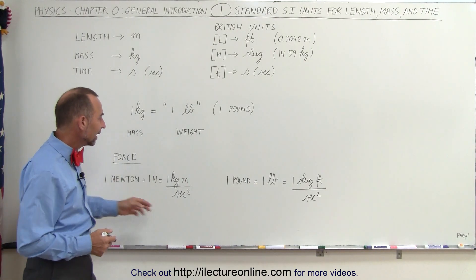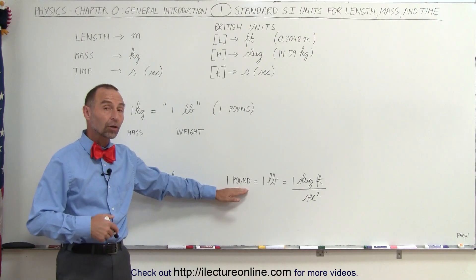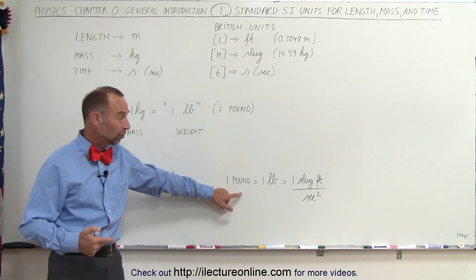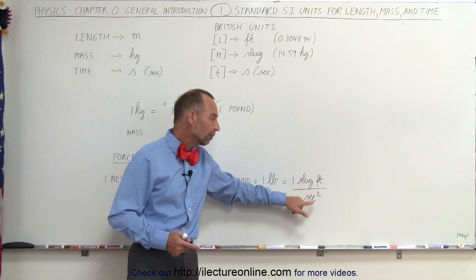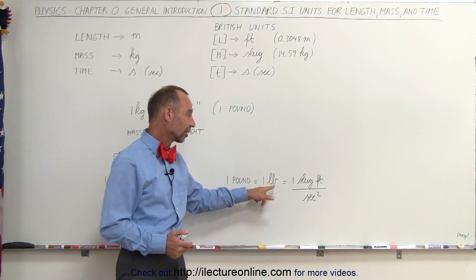So what is the force in the British system? It's called the pound. And the pound is the force that will give a mass of one slug the acceleration of one foot per second squared. And that's where a slug comes in.